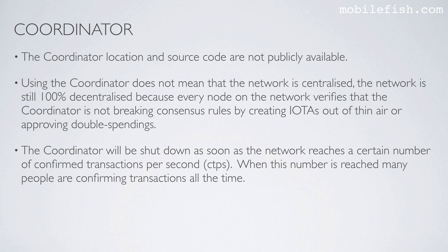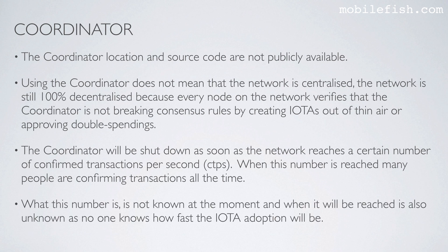The coordinator will be shut down as soon as the network reaches a certain number of confirmed transactions per second. When this number is reached, many people are confirming transactions all the time. What this number is is not known at the moment, and when it will be reached is also unknown, as no one knows how fast the IOTA adoption will be.